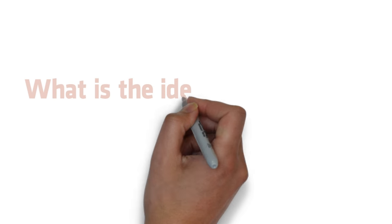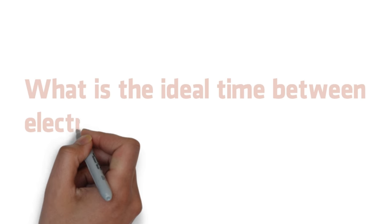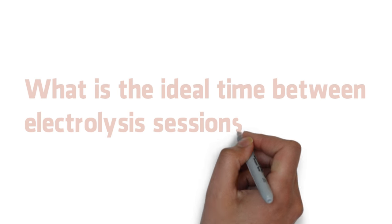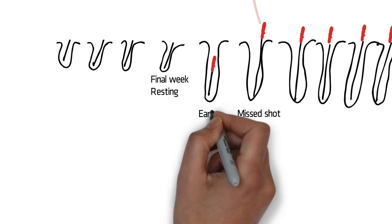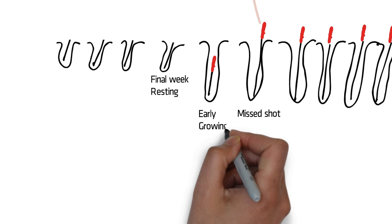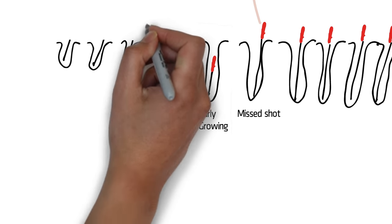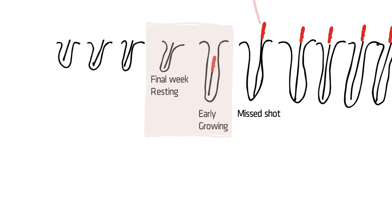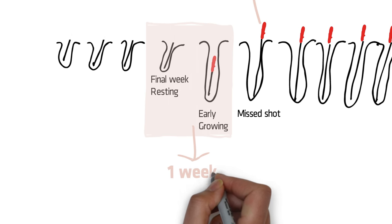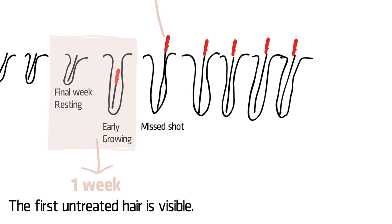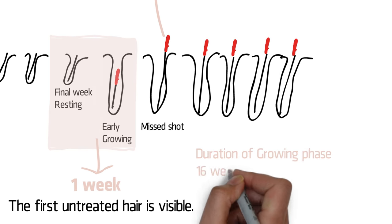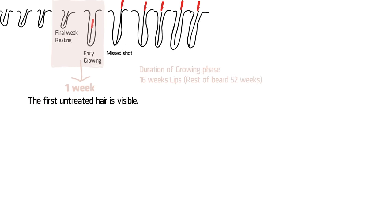Now let's tackle the much asked question: how much time should I keep between electrolysis sessions? To answer this, you have to understand the hair cycle a little bit. Let's say hair number 4 is in her final day of resting on the day of treatment. This hair will start growing the day after the session and appear on the surface of the skin within the week. The early anagen hair will even reach the surface in less than a week.